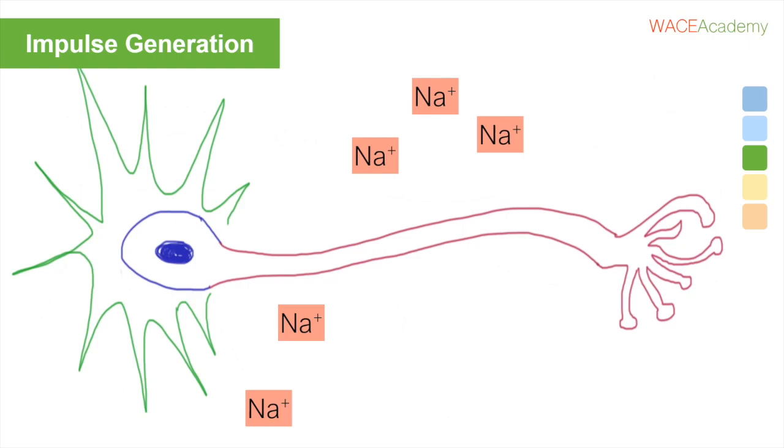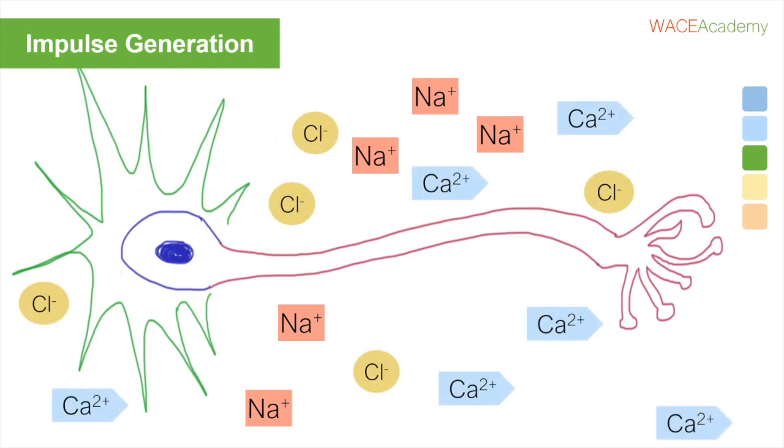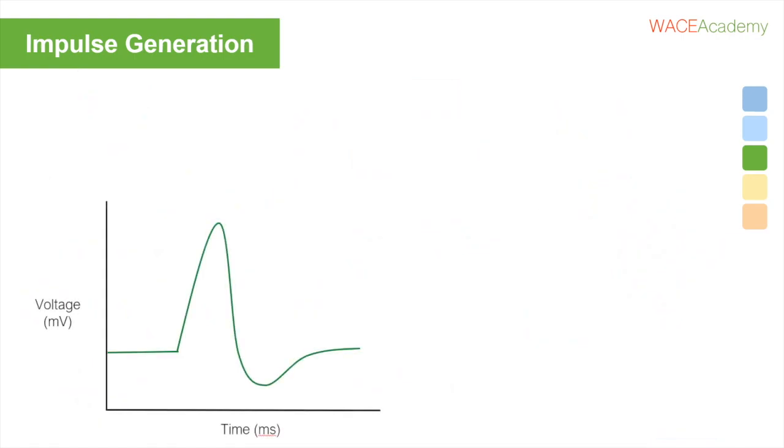Generally, there are lots of positive sodium, negative chloride, and positive calcium ions on the outside of a neuron, and lots of positive potassium ion and some other negatively charged ions on the inside. The inside of the neuron tends to hang out at around negative 65 millivolts, which we can see here on the graph.